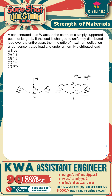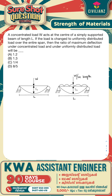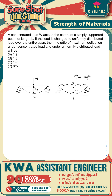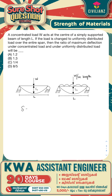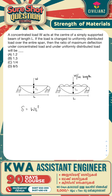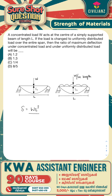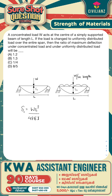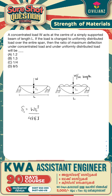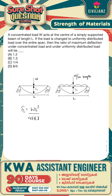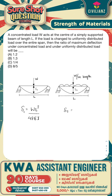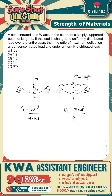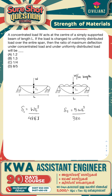For a simply supported beam with a concentrated load, the maximum deflection is delta equals WL³ divided by 48EI. For a simply supported beam with a uniformly distributed load, the maximum deflection is 5WL³ divided by 384EI.